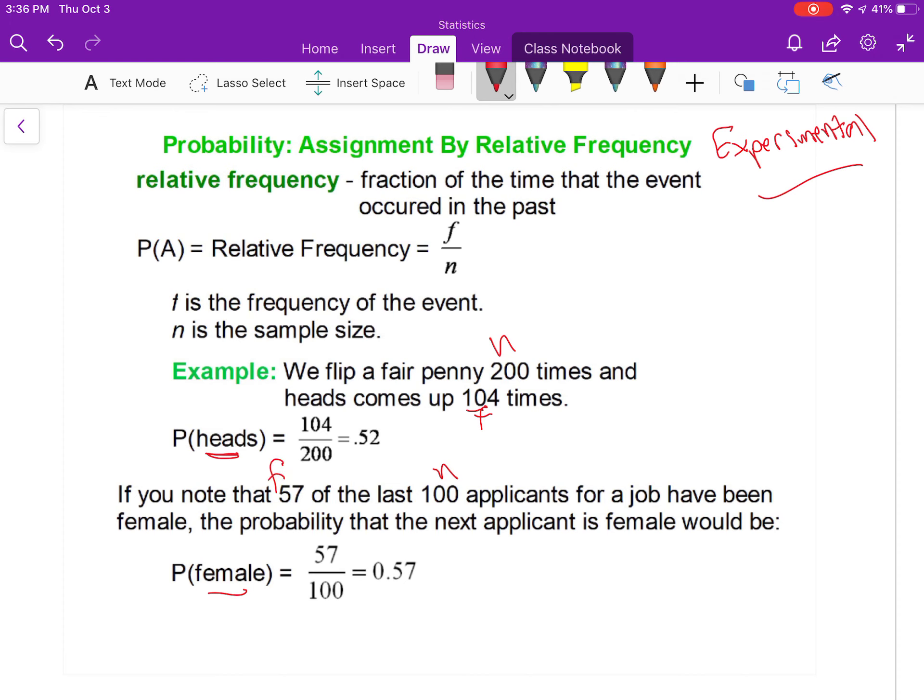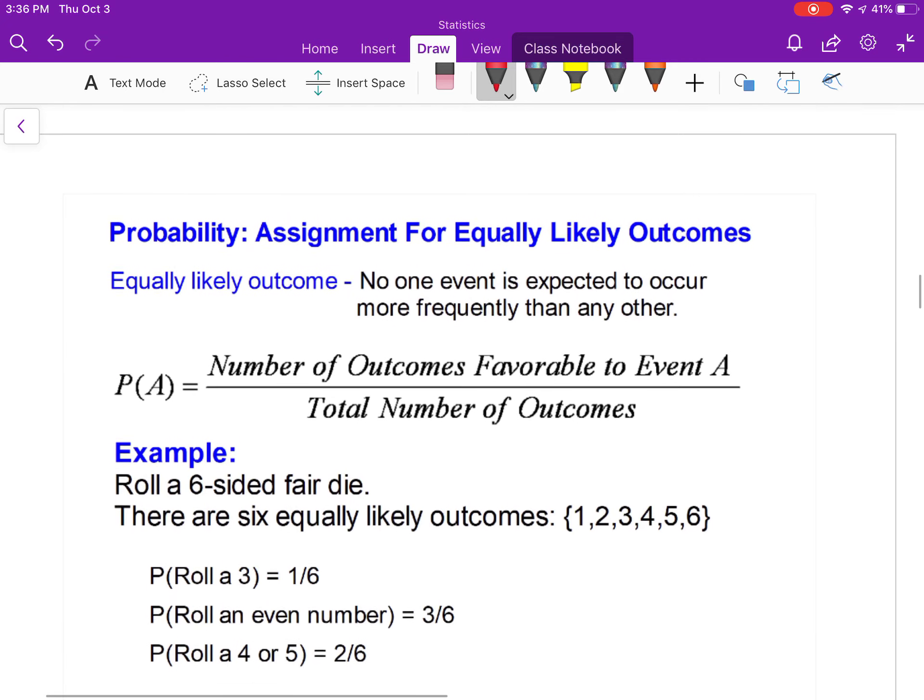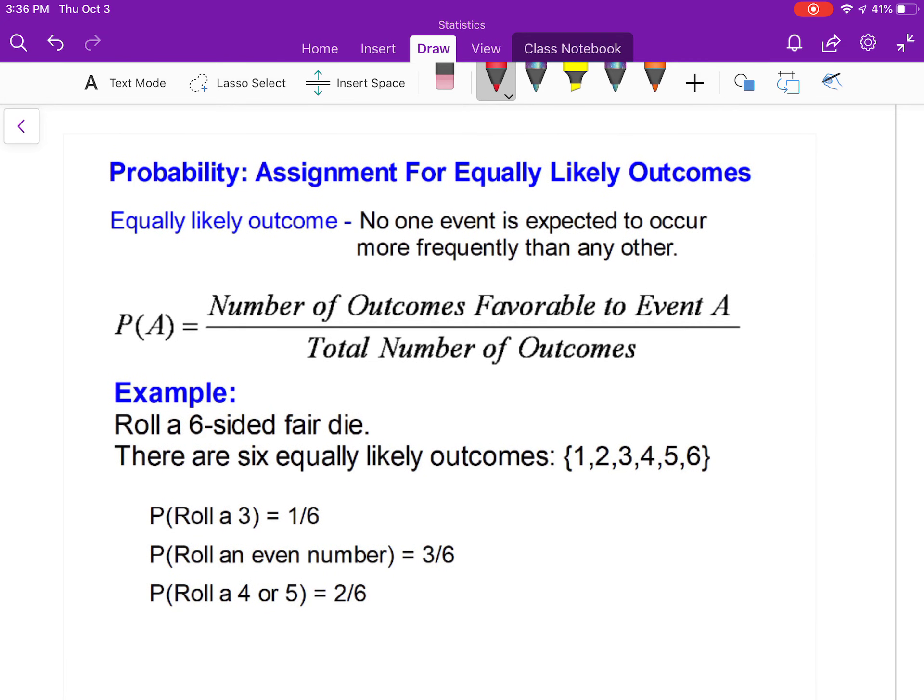Experimental probability is where you run the experiment, you actually flip the coin and record what those are. Probability assigned for equally likely outcomes: equally likely outcomes means that no one event occurs more than another. This is what I would call your theoretical.